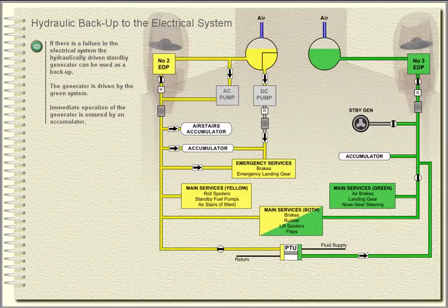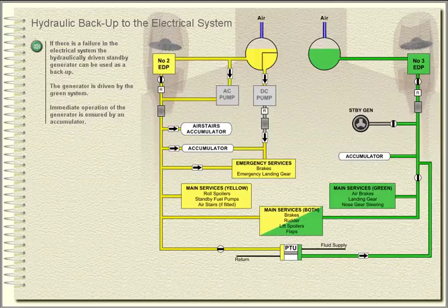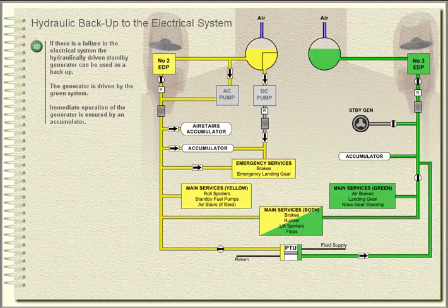Hydraulic backup to the electrical system. If there is a failure in the electrical system, the hydraulically driven standby generator can be used as a backup. The generator is driven by the green system. Immediate operation of the generator is ensured by an accumulator.